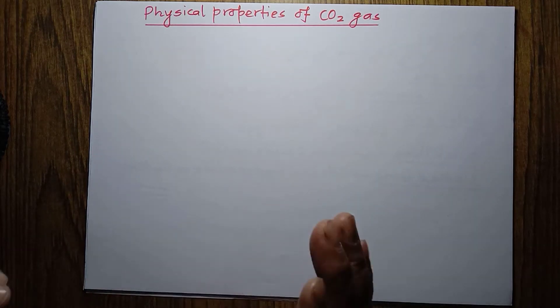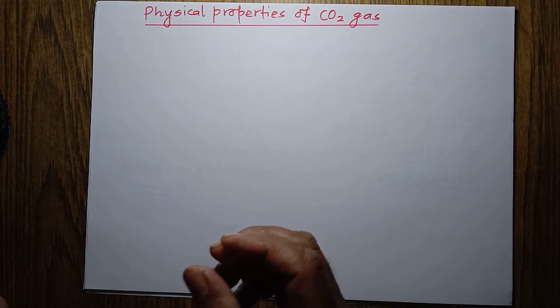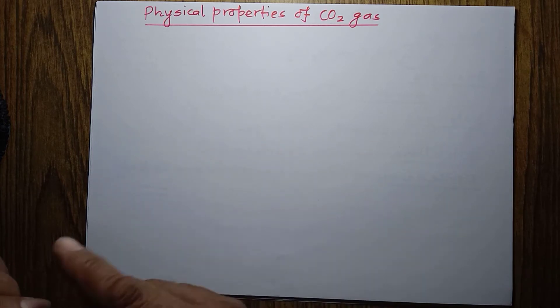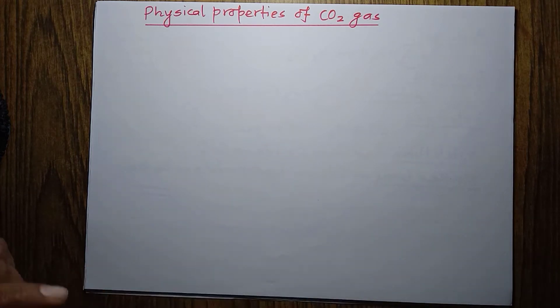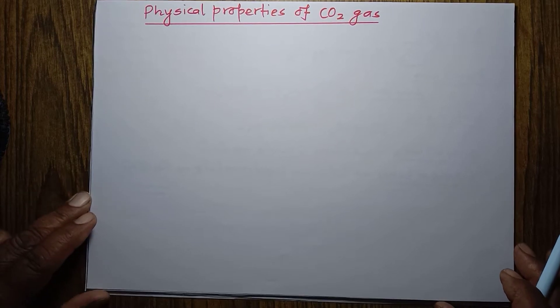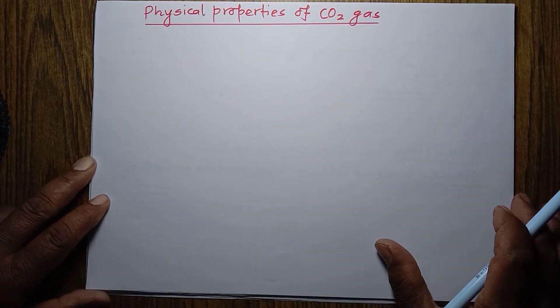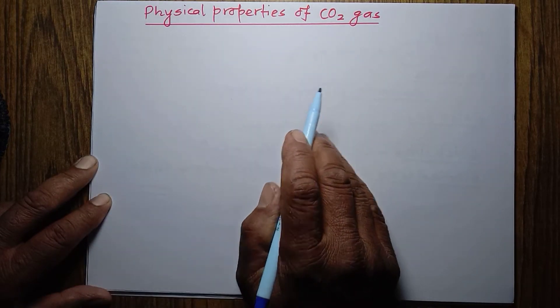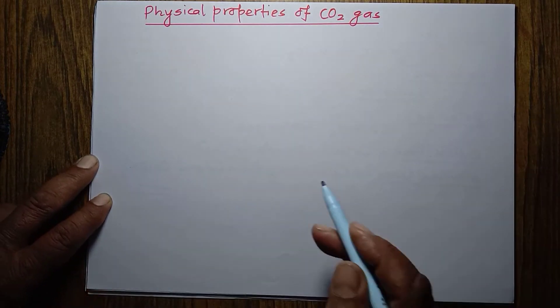Physical property includes color, odor, taste, density, boiling temperature, freezing temperature, etc. And that's why physical properties of different substances are expressed in terms of these points.